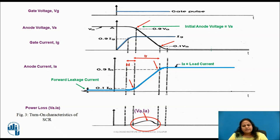Also, during rise time, turn-on losses are the highest due to high anode voltage and large anode current occurring together in the SCR.